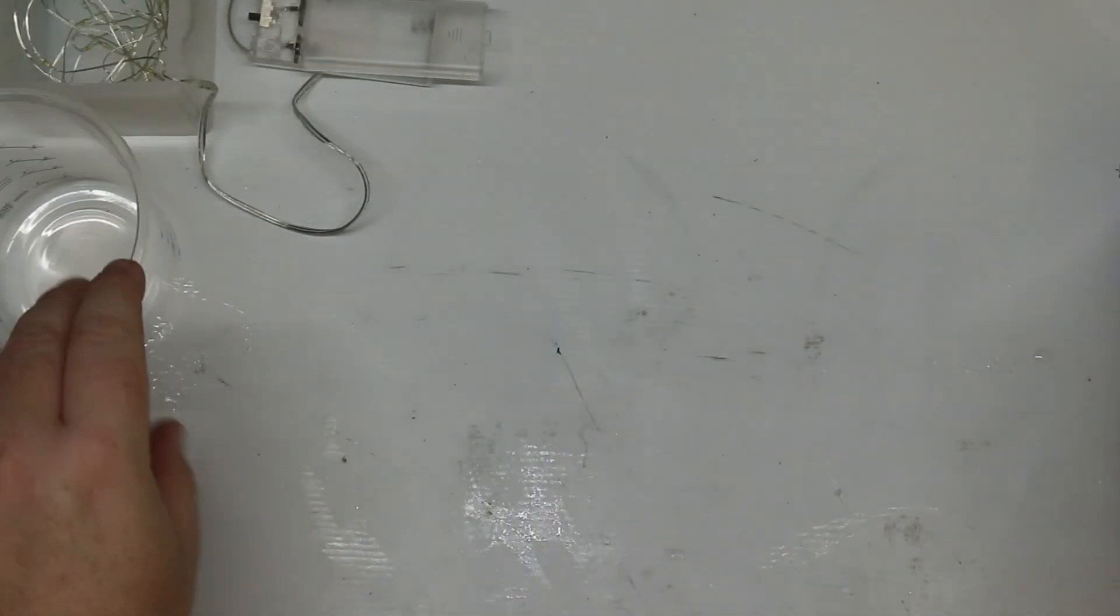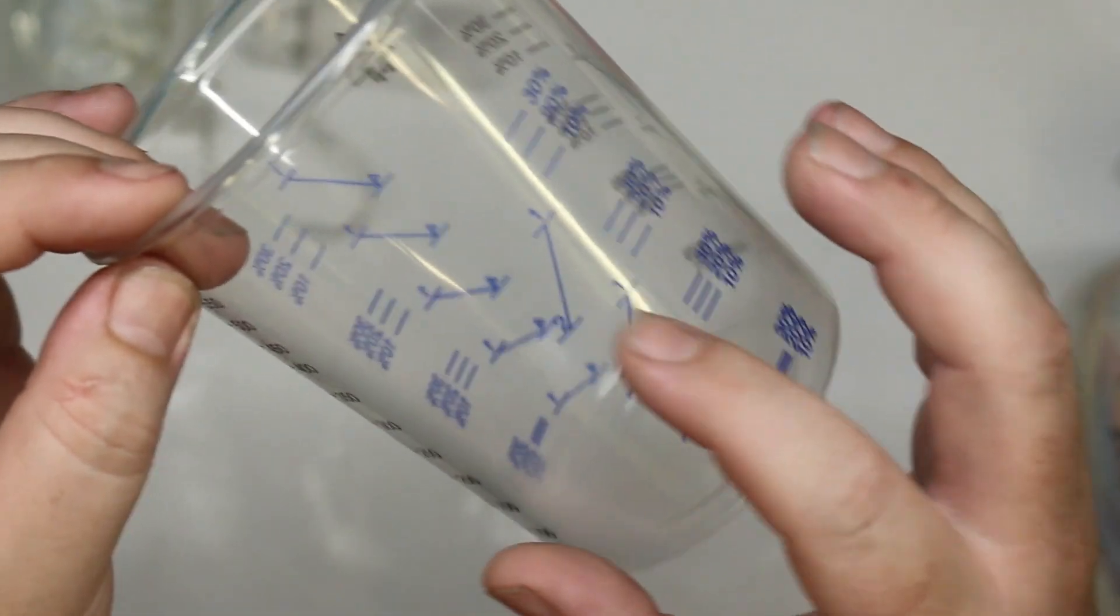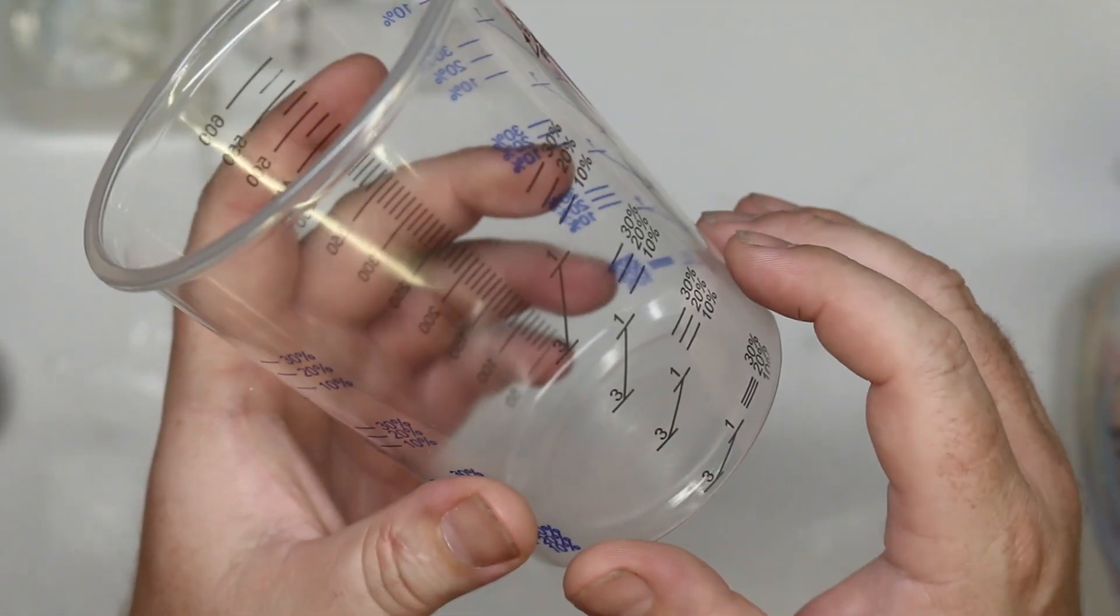Now the best way to do that is by using a paint mixing cup. It has all these ratios on the side and it makes it really easy to get your mix right.